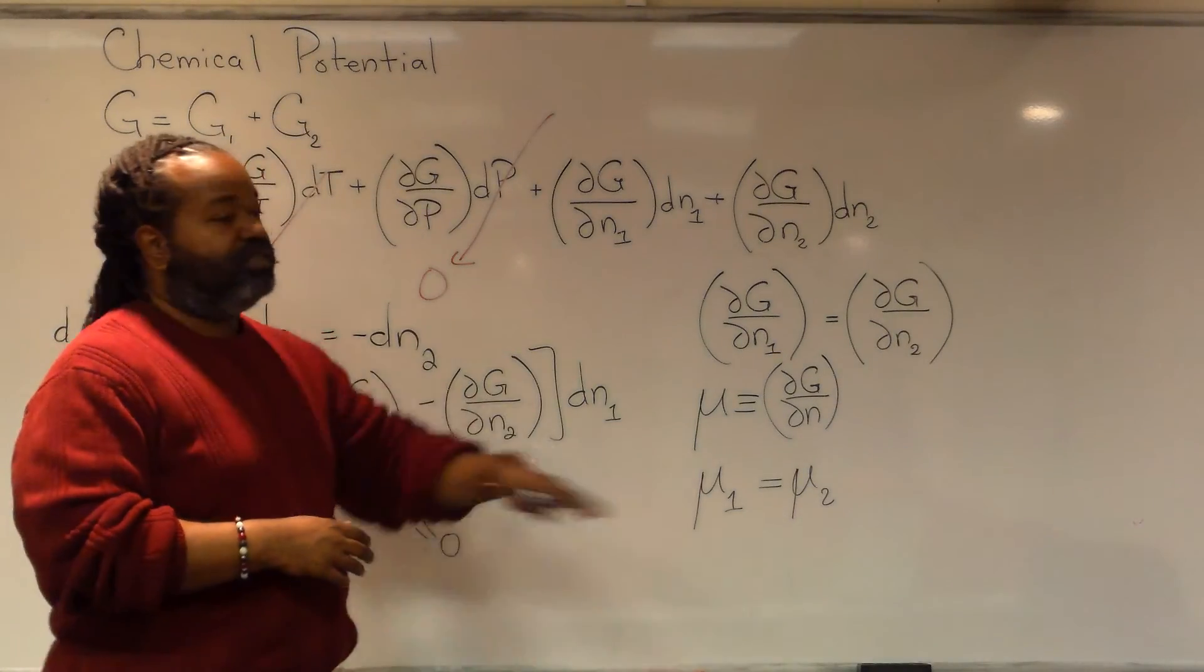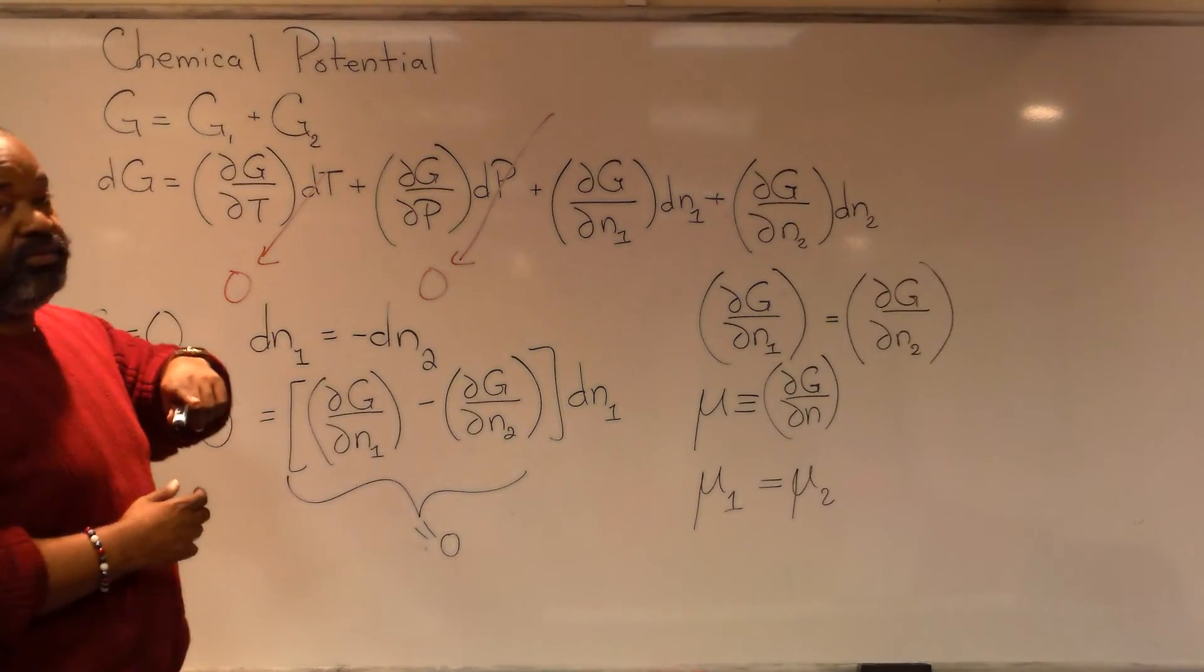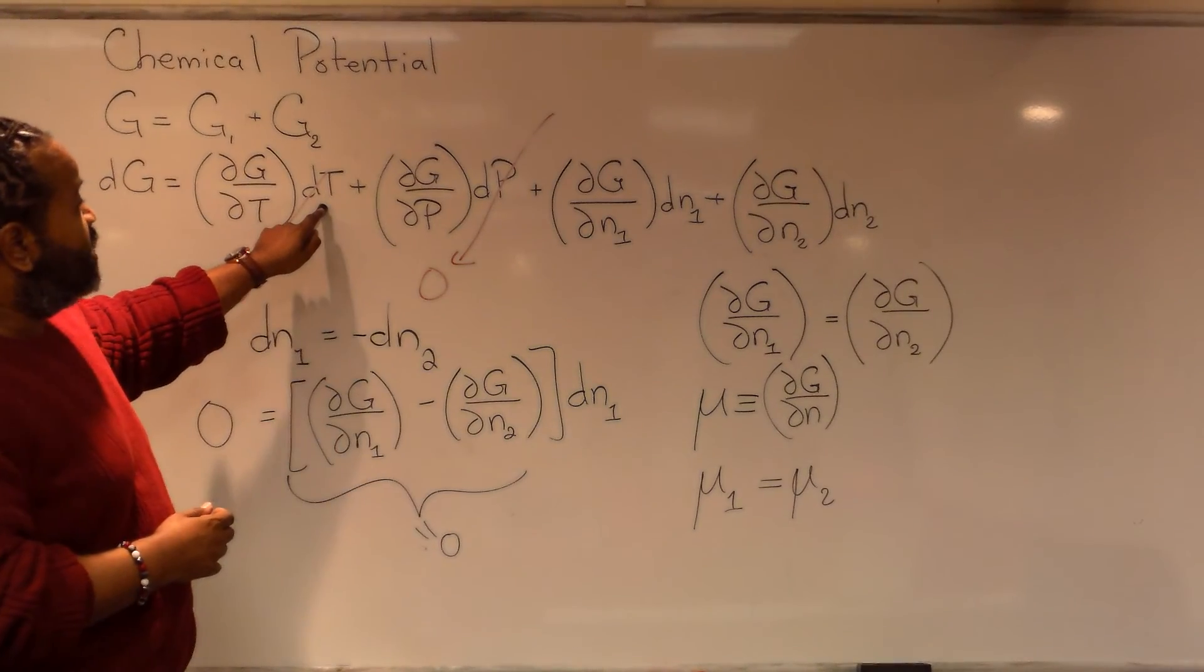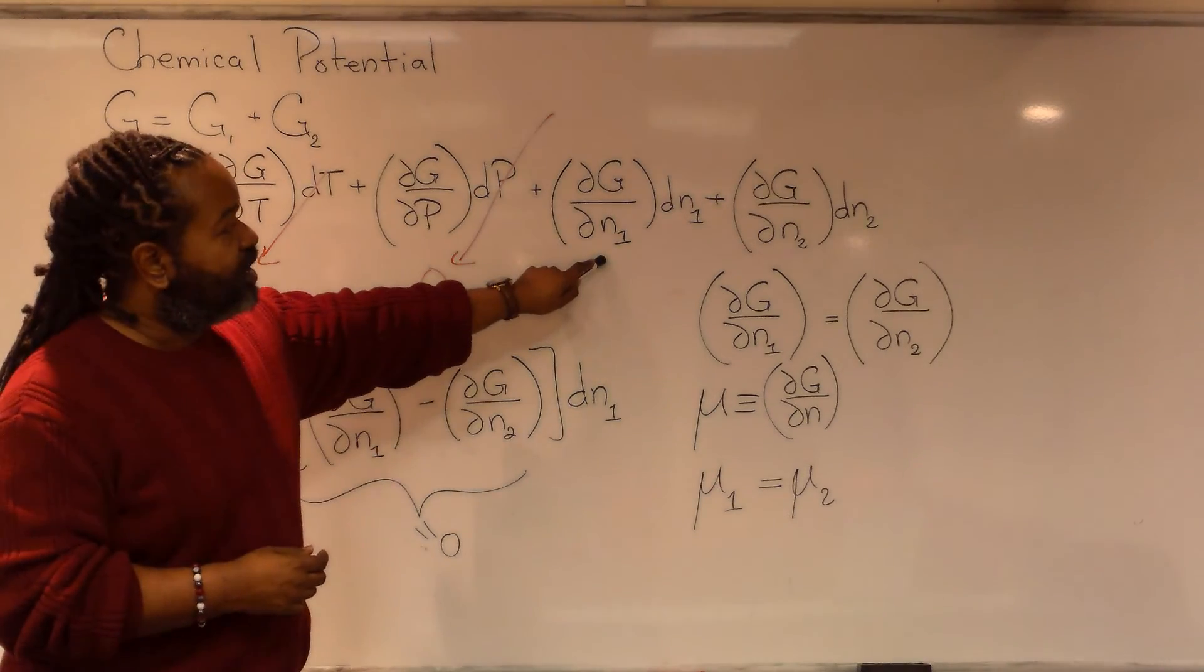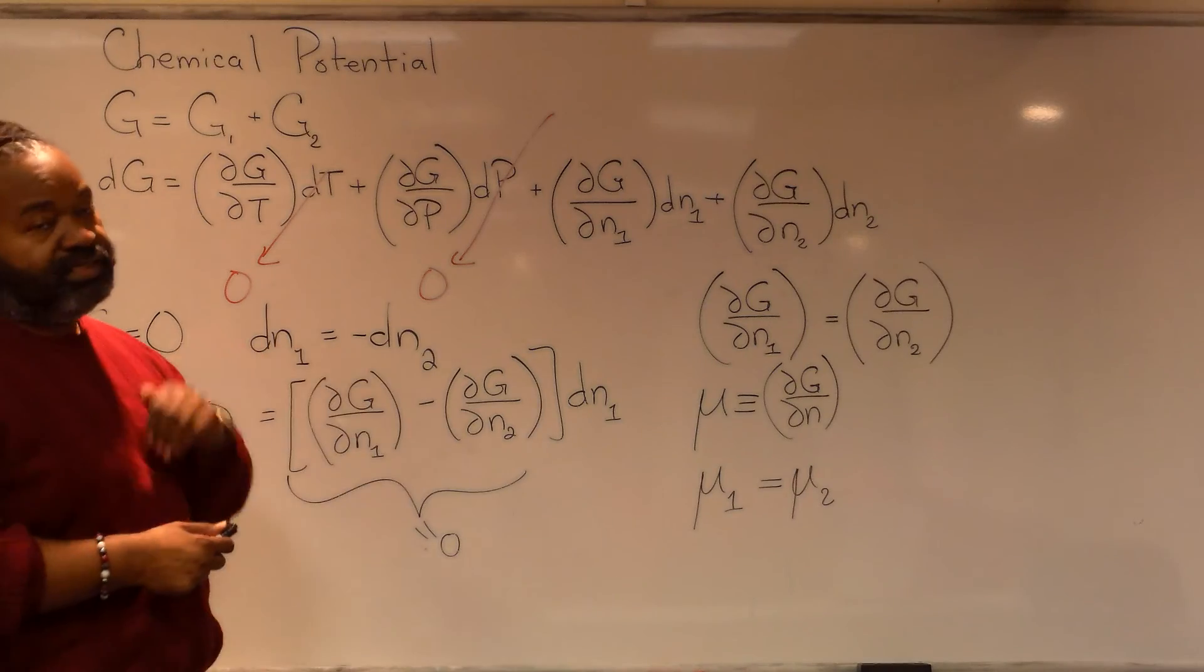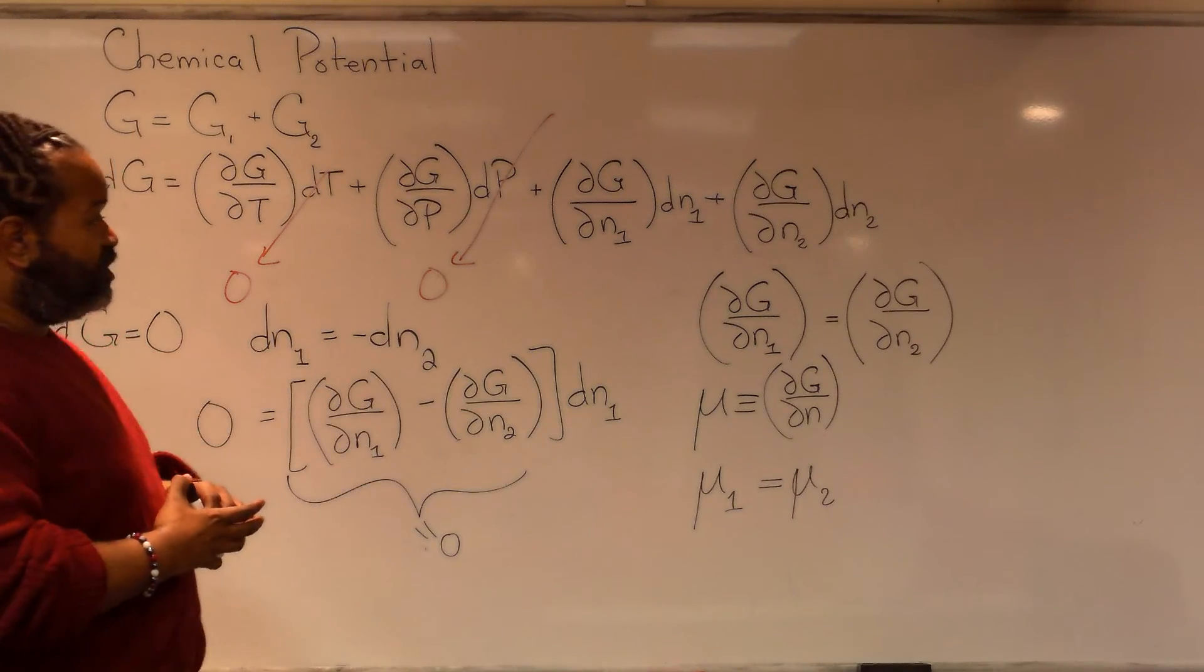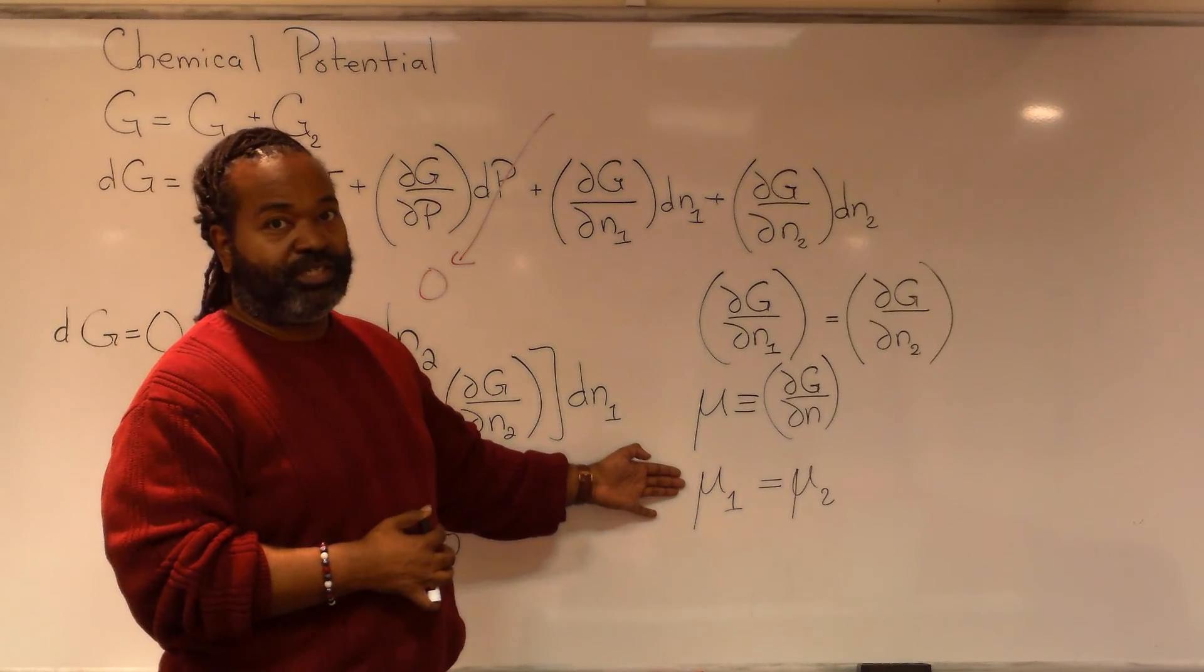So this development of this concept of chemical potential begins with the idea that if we start with something in equilibrium, that phase change occurs at constant temperature and pressure. The entire change is due to the number of moles. We use some baseline ideas about equilibrium to reach the point where we can argue that these quantities have to be equal to each other.